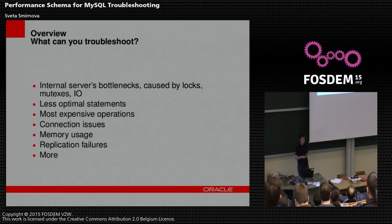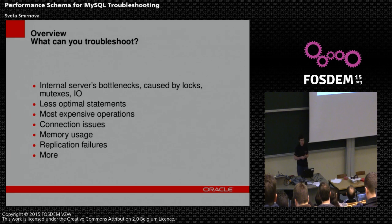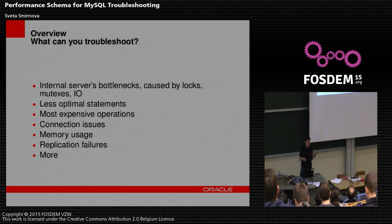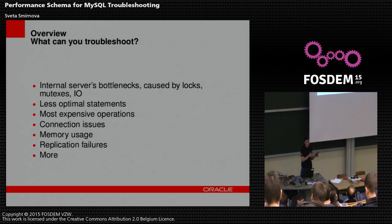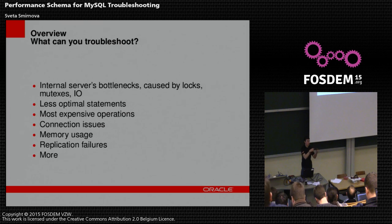So what can we troubleshoot? Performance Schema was first introduced in version 5.5, and in that version you could only troubleshoot server bottlenecks like cost by logs, mutexes, and IO. Performance Schema works like DTrace — it has instrumentation in the code, and when the code executes, a counter increases.